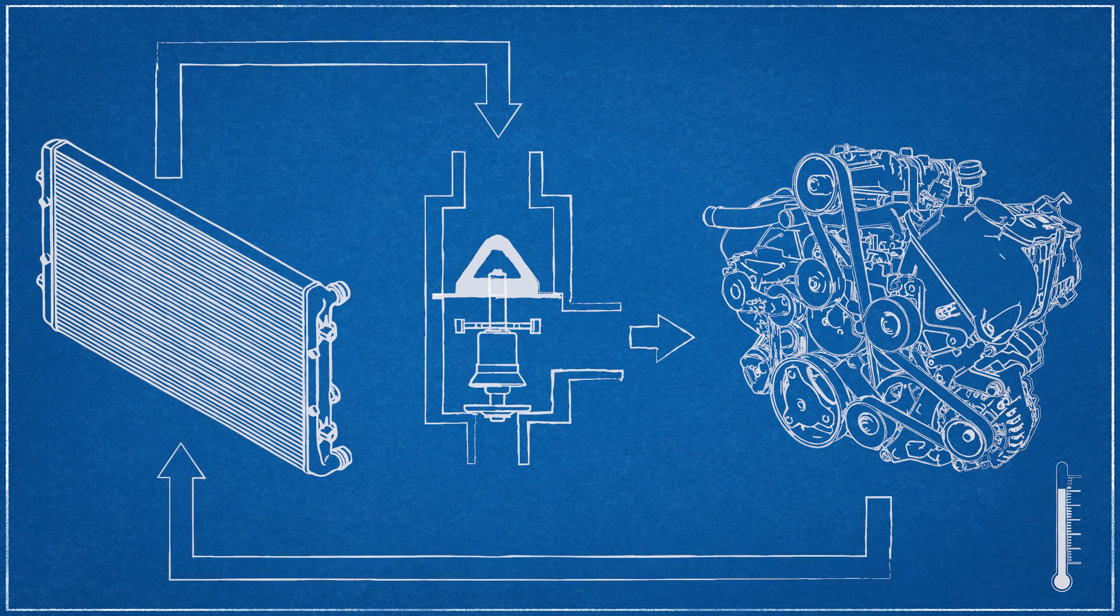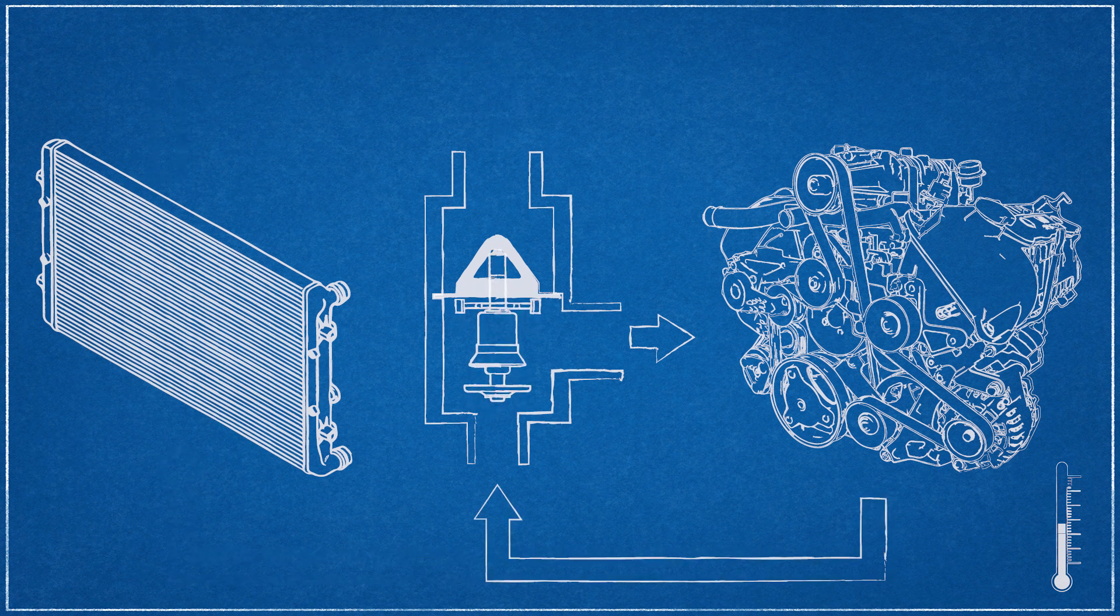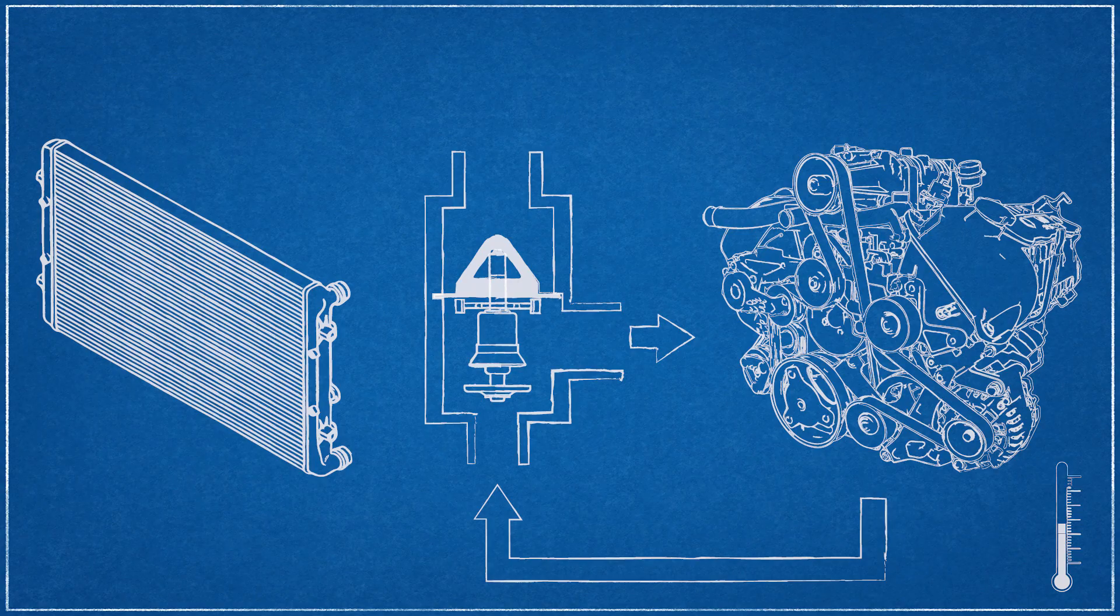If the engine temperature begins to drop, the wax solidifies, shrinking it, causing the valve to close and once again allowing the thermostat to block coolant flow.